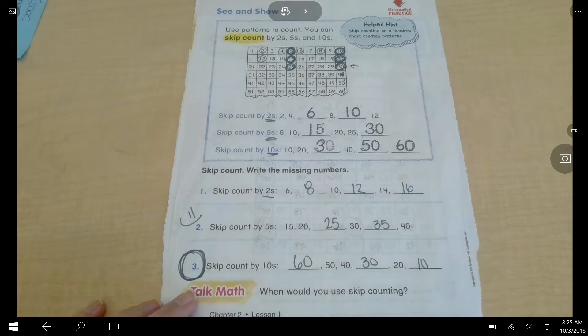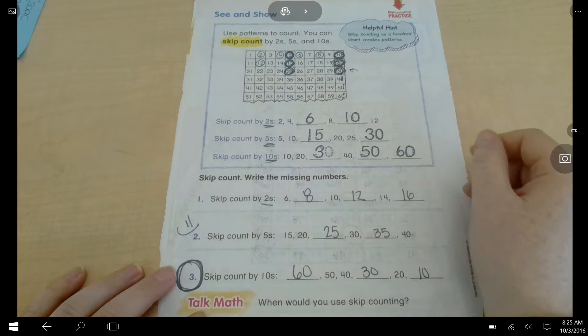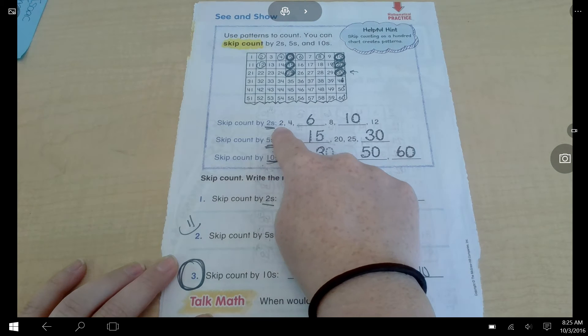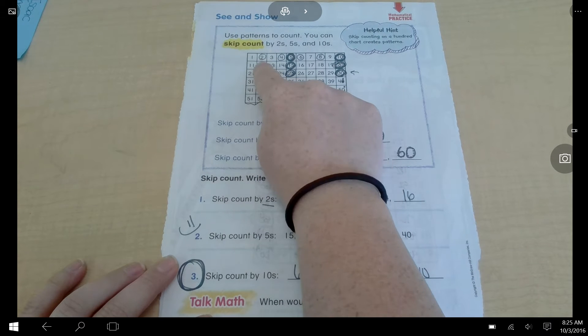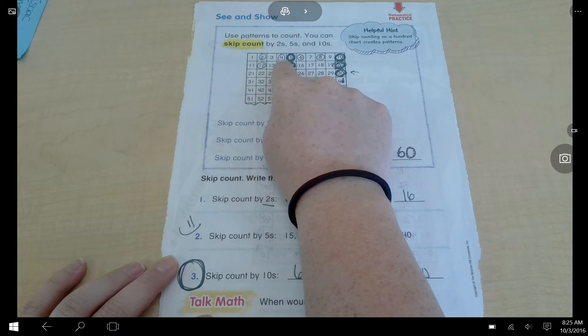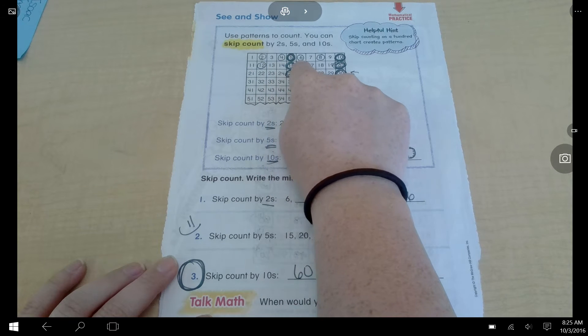On the back, it's telling you to skip count. So, when you skip count, you start at the number that it has you starting at in the pattern, and then you skip count. So, this is the number 2. It's telling me to skip count by twos. So, 1, 2. The next number is 4.